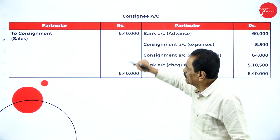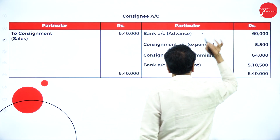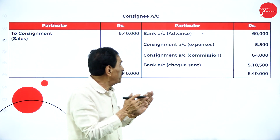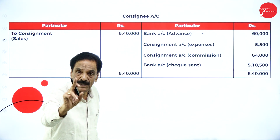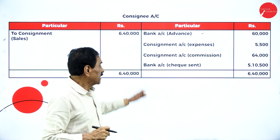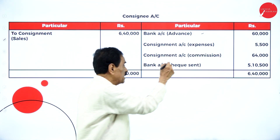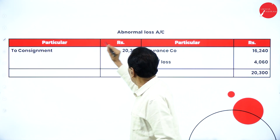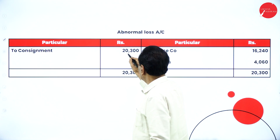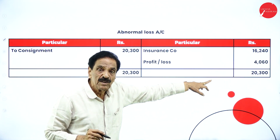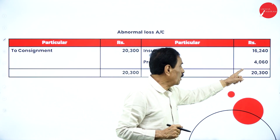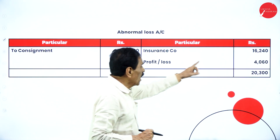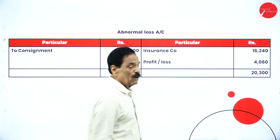Now moving to the consignee account. The entire sale amount of Rs. 6,40,000 lies with the consignee. He will deduct his advance, his expenses, and his commission. Whatever balance remains is sent by the consignee to the consignor. For the abnormal loss account: total loss is Rs. 20,300; recovered from the insurance company is Rs. 16,240; the difference of Rs. 4,060 will go to the profit and loss account.